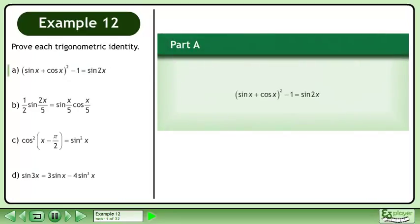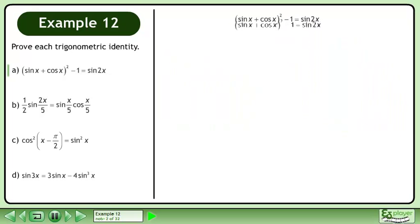In Part A, prove that (sin x + cos x)² - 1 = sin 2x. Rewrite the statement and draw a line.